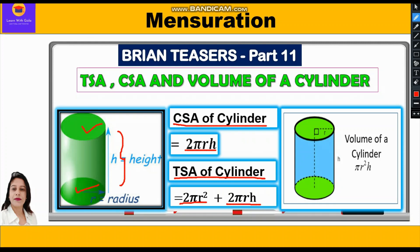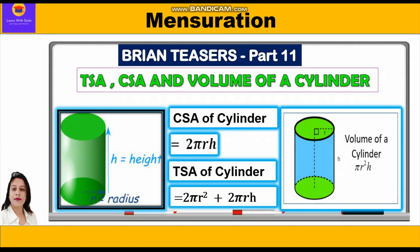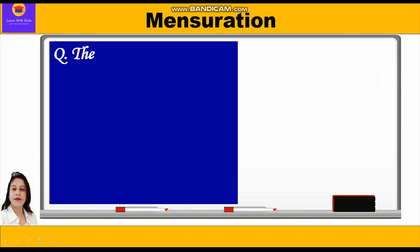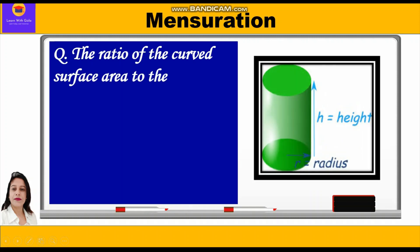So we can write the total surface area formula as 2πr² + 2πrh. Now for the volume of a cylinder, it is area of the base into height. Since the base is circular, the formula is πr²h. Now let's start with our question.